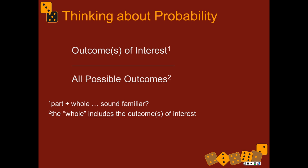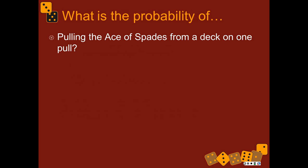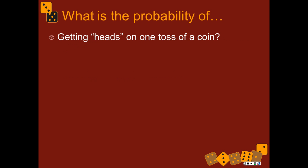So what's the probability of pulling the Ace of Spades from a deck on one pull? There are 52 cards, so 1 divided by 52 — it's 1 in 52. Pulling the 4 of diamonds, also 1 in 52 because there's one 4 of diamonds. What's the probability of getting heads on one toss of a coin? It's 1 half, or 0.5, or 50% — however you want to express that. It's more common to use proportions among mathematicians and statisticians, but we sometimes switch around and use fractions and ratios.